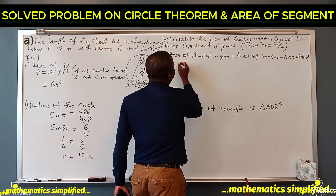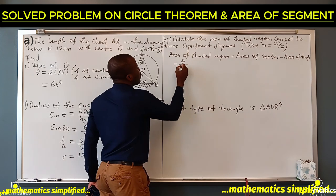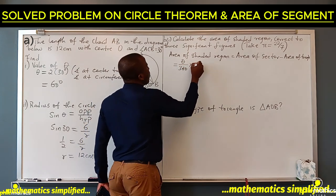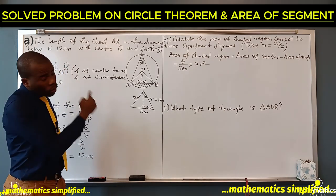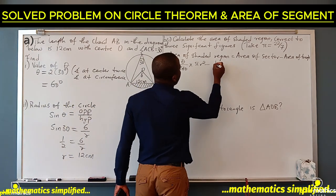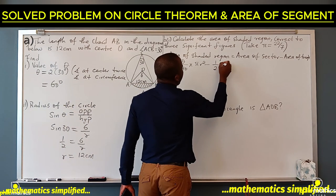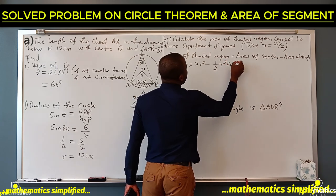What is the formula for area of sector? That is theta over 360 times π r squared. And area of triangle that we will use, because we have an angle, will be half r squared sine theta.